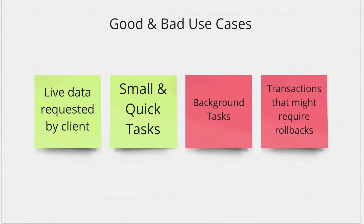Now let's look at some use cases that might suffer from HTTP communication. You don't want to use HTTP for background tasks, because by definition background tasks mean that the caller service does not care about the response right now, so there's no need for a blocking call. The other bad use case is more tricky: if service A needs to call service B, and B needs to call service C — where A changes data in B and B changes data in C — all these changes need to happen in a chain of HTTP calls. If one call fails or runs into a timeout, we might leave our data in the wrong state. We can add rollback logic, but these can get complex quickly. So for transactional operations that might need rollbacks, HTTP communication might not be the best idea.